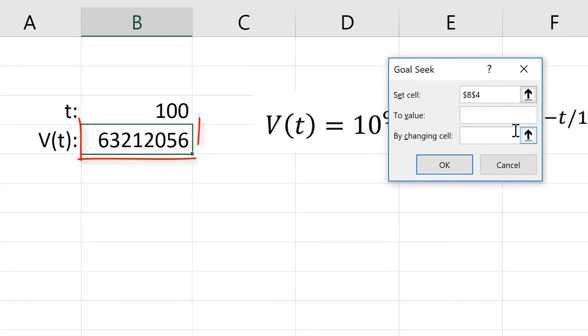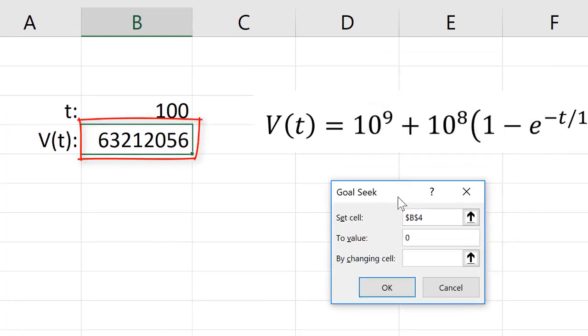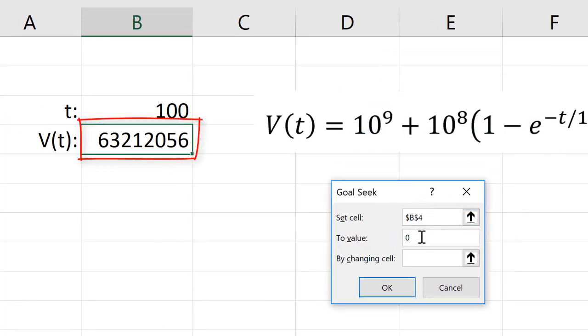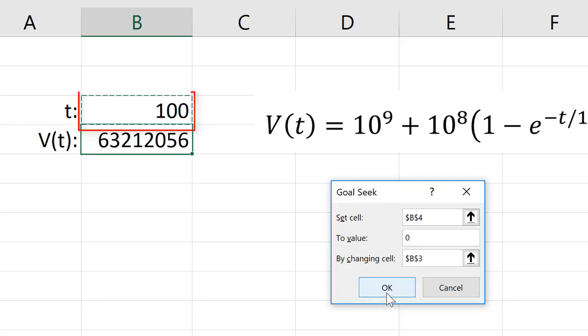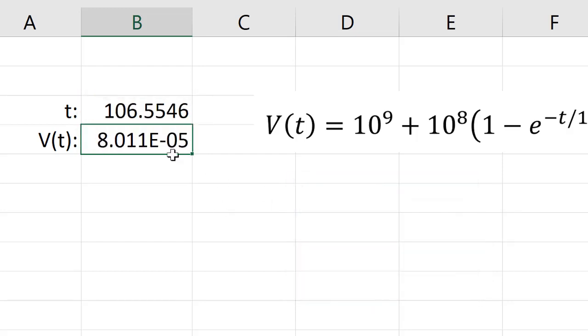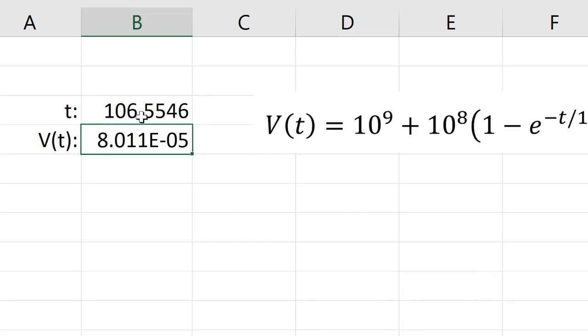We're going to set cell B4 to a value of 0. We want to figure out when there's going to be 0 left. It doesn't have to be 0. I could say when is there going to be a million liters left or a billion liters left by changing the time. And when we do that, it cranks through. It finds a solution. It says about 106 and a half days until this reservoir will be empty.